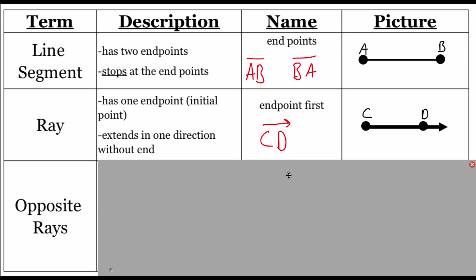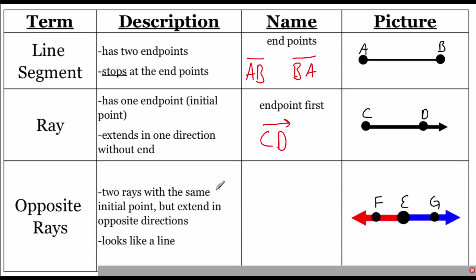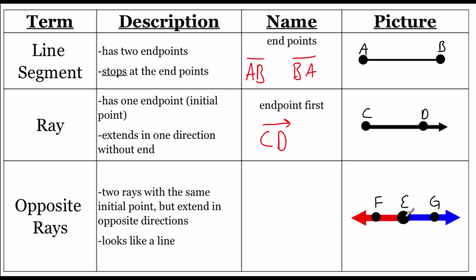Our last vocabulary word is opposite rays. These are two rays that have the exact same initial point but extend in opposite directions. When drawn, it looks like a line, but there are in fact two different rays. Looking at the picture, there's a ray that starts at E and points to the left through point F — highlighted in red — so we name that ray EF. We also have a ray starting at E heading to the right through point G, named EG. So ray EF and ray EG are opposite rays since they point in opposite directions.